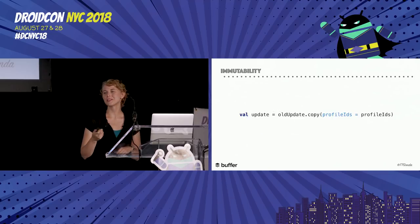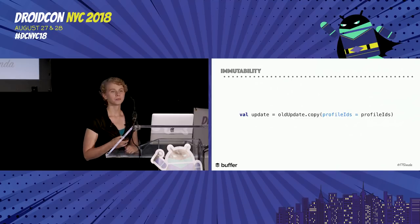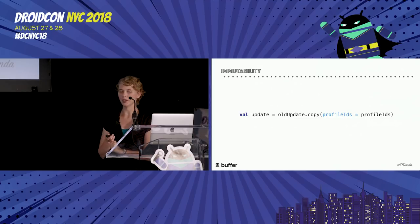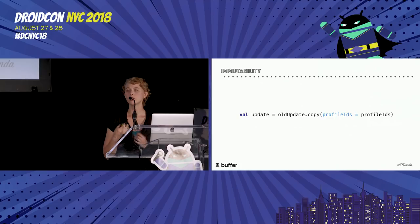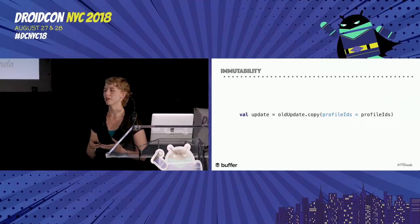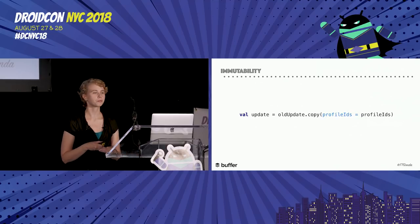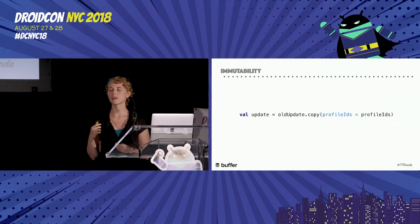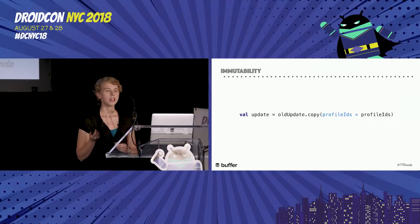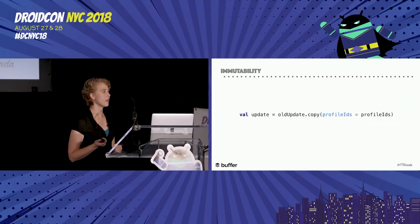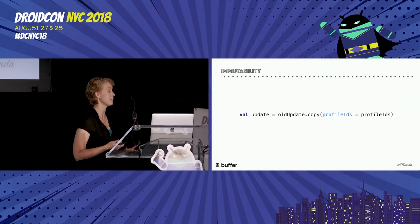Here's an example of using immutability in our code base. When we want to change the profiles on an update, we don't want to create any unexpected states with something currently depending on those profiles. So we do that by creating a copy of the update and changing only the profiles. Kotlin provides a copy method on data classes to make this really easy.